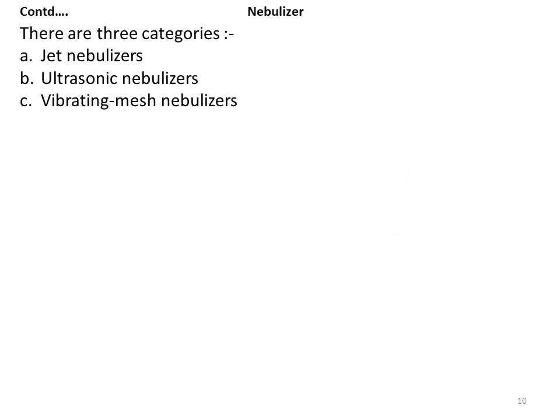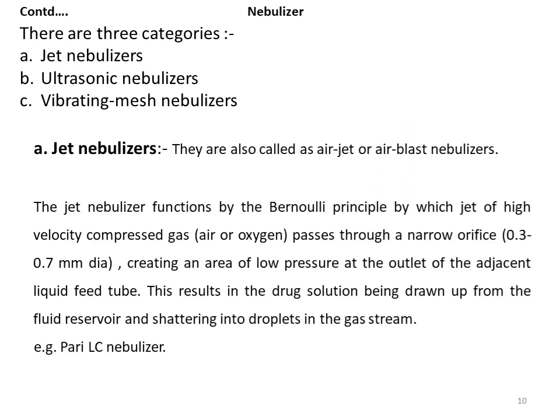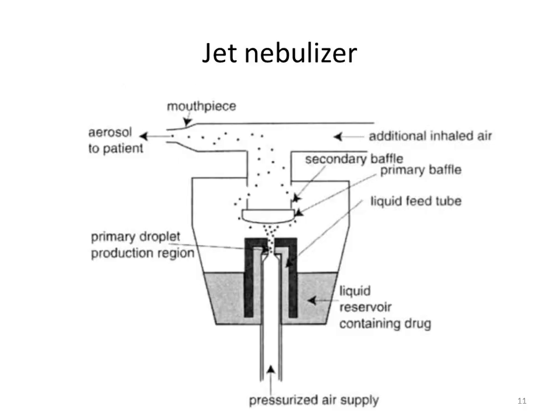There are three types of nebulizers: jet nebulizers, ultrasonic nebulizers, and vibrating mesh nebulizers. Jet nebulizers are also called air-jet or air-blast nebulizers. They function by Bernoulli's principle, by which a jet of high-velocity compressed gas — air or oxygen — is passed through a narrow orifice of 0.3 to 2.7 mm diameter, creating an area of low pressure at the outlet of the adjacent liquid feed tube. This causes the drug solution to be drawn up from the fluid reservoir and shattered into droplets in the gas stream. An example is the pari-LC nebulizer.